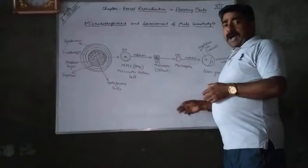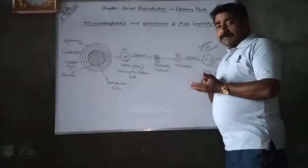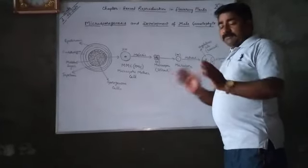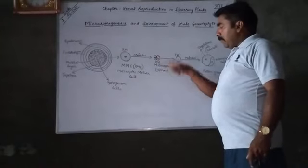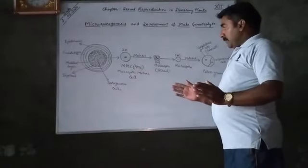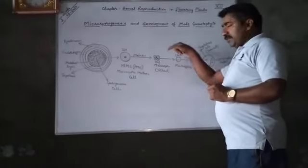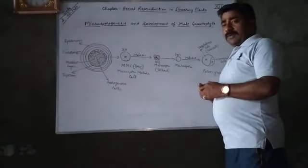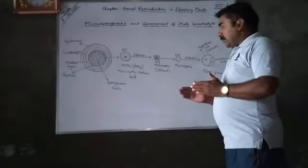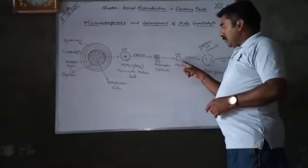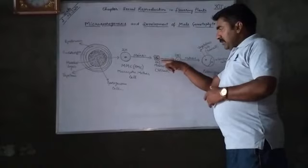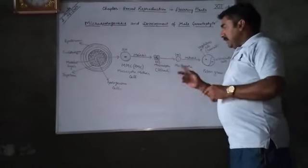After some time, this adhesive cementing material, callose, disintegrates — it breaks — and all four microspores of the tetrad get separated from each other. After separation, each of the microspores again undergoes cell division. All four separated microspores each undergo further cell division.